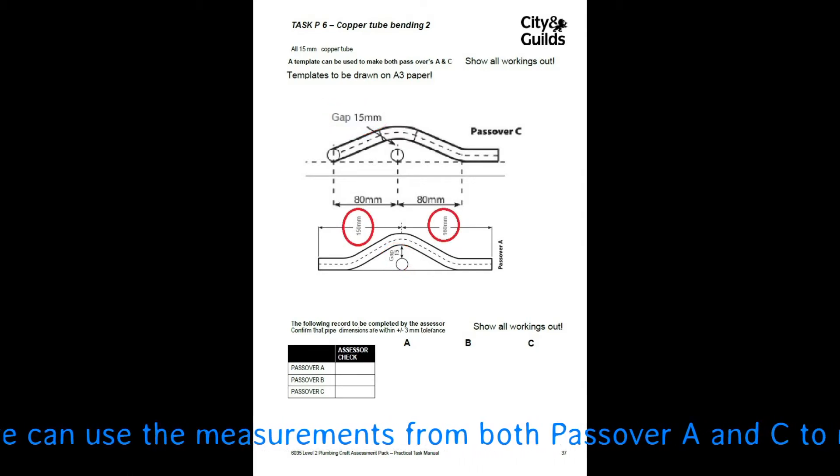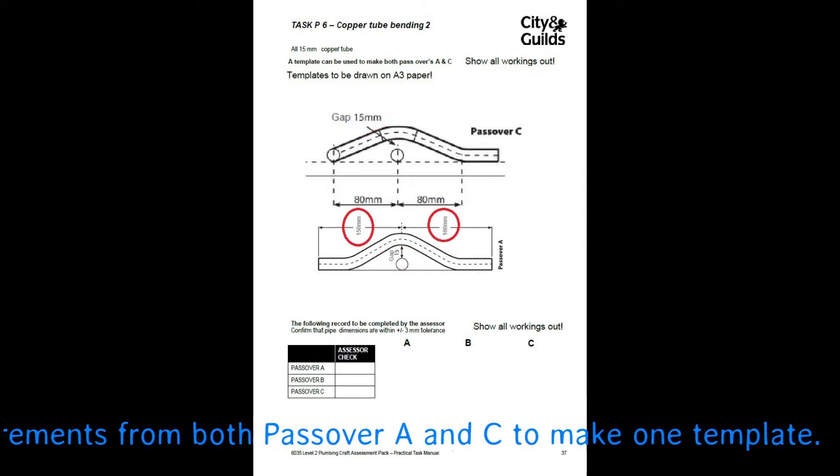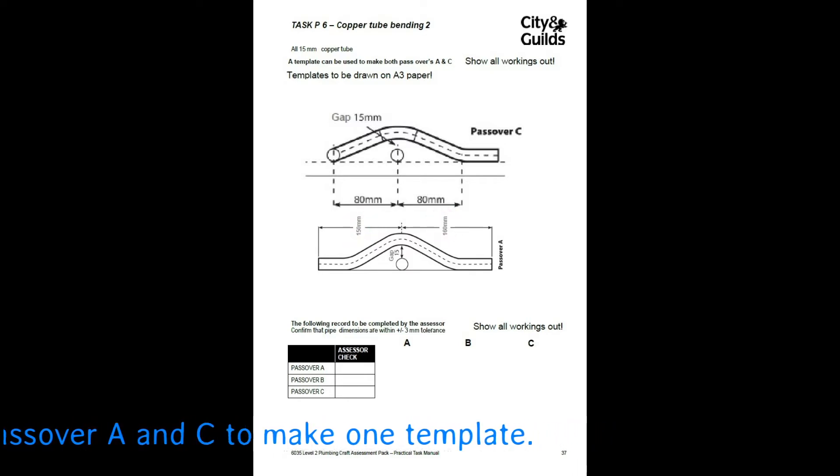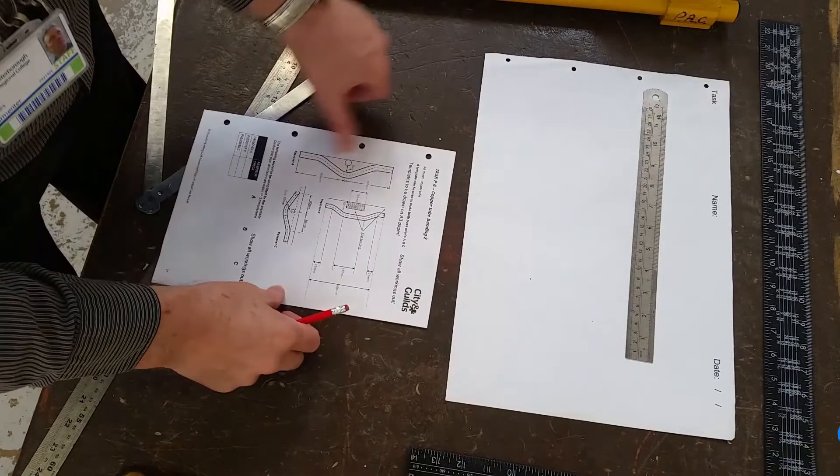From the center to the end on the left is 150, from the center to the end on the right is 160, and the distance between the center pipe to the center of our bottom bends are 80.